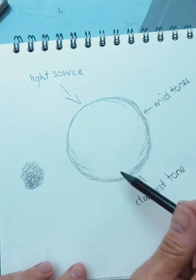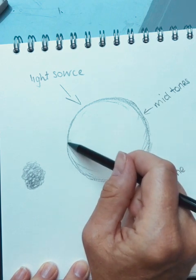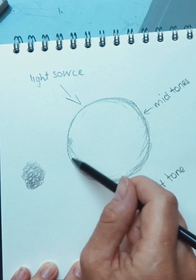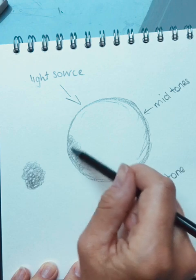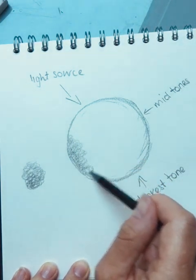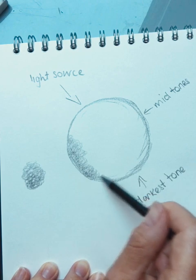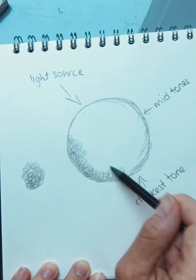So I'm going to start by adding in my tones. So I'm pressing really, really lightly with this pencil. Just going around to fill in our sphere shape because we want to create a 2D form, make it look circular.